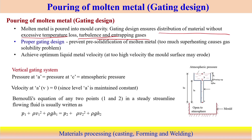If the velocity is too high, then erosion may happen when the liquid metal interacts with the mold cavity. Too much velocity and the mold cavity may erode — erosion might happen in the mold cavity. Therefore, we have to find some optimum velocity and optimum superheating temperature for a proper design of the gating system.